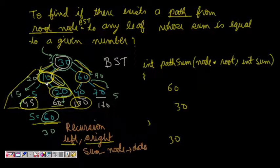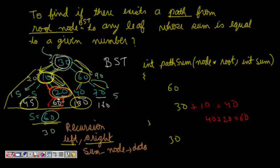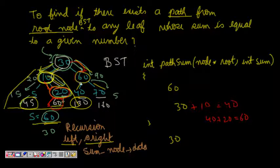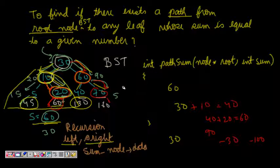Coming to node 20, I have already collected 30 plus 10 which is 40, so now I need to collect 20 more. I arrive at node 20, so 40 plus 20 is 60 and going left it is null — but I've collected 60 so I've reached the leaf node and the sum is 0, meaning I'm done. On another path if I collected 30 then 60, I'm already at 90 so I have minus 30, and if I go further to a leaf node I have exceeded the sum, so that path gives no result.